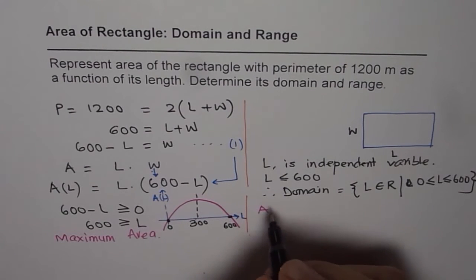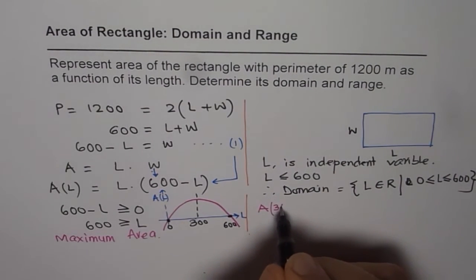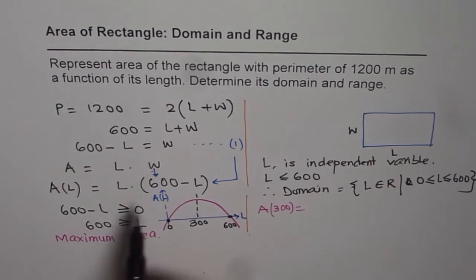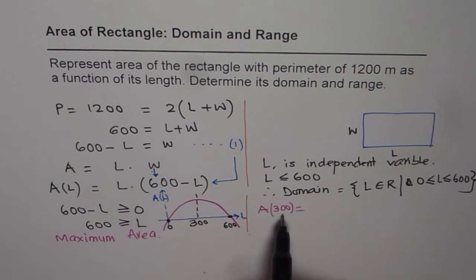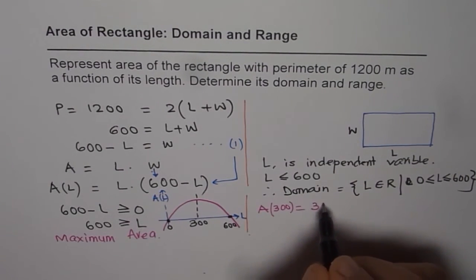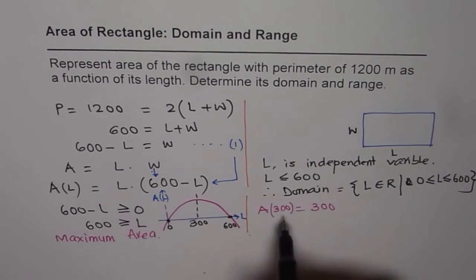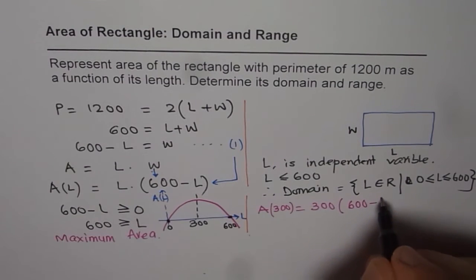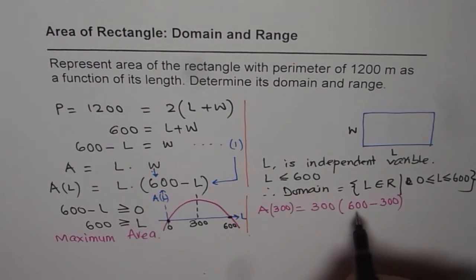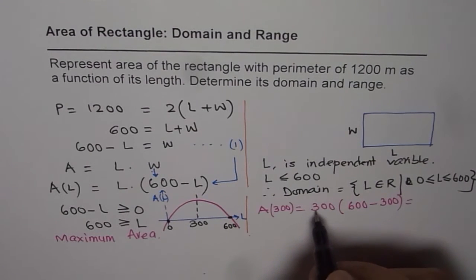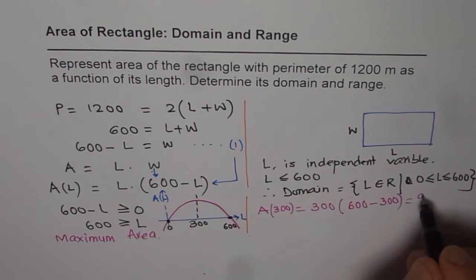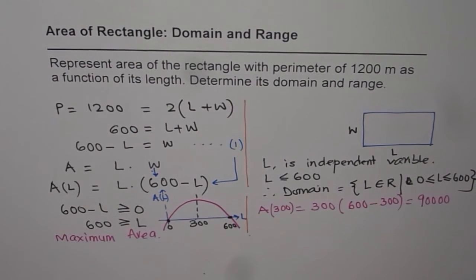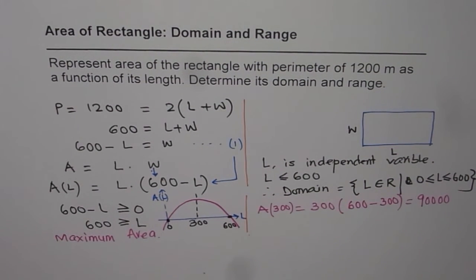So let us find out this value for length of 300. So we will be 300. So I am substituting L as 300 now. So 300 times 600 minus 300. 600 minus 300 is 300. So we get 300 times 300. So 3 times 3 is 9 and 4 zeros. So that is the maximum area.